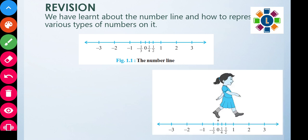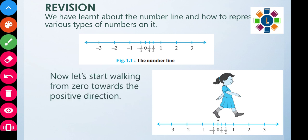On the number line, moving to the right from zero is the positive direction. We mark positive numbers going further and further in the positive direction from zero.